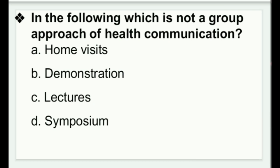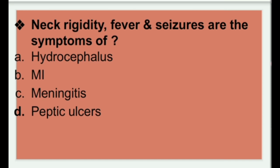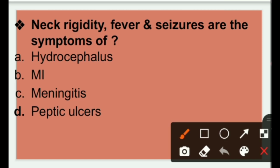Next: Neck rigidity, fever, and seizures are the symptoms of — hydrocephalus, myocardial infarction, meningitis, or peptic ulcers. The right answer is option C, meningitis. Meningitis is inflammation of the brain and spinal cord membranes, which causes neck rigidity, fever, and seizures.